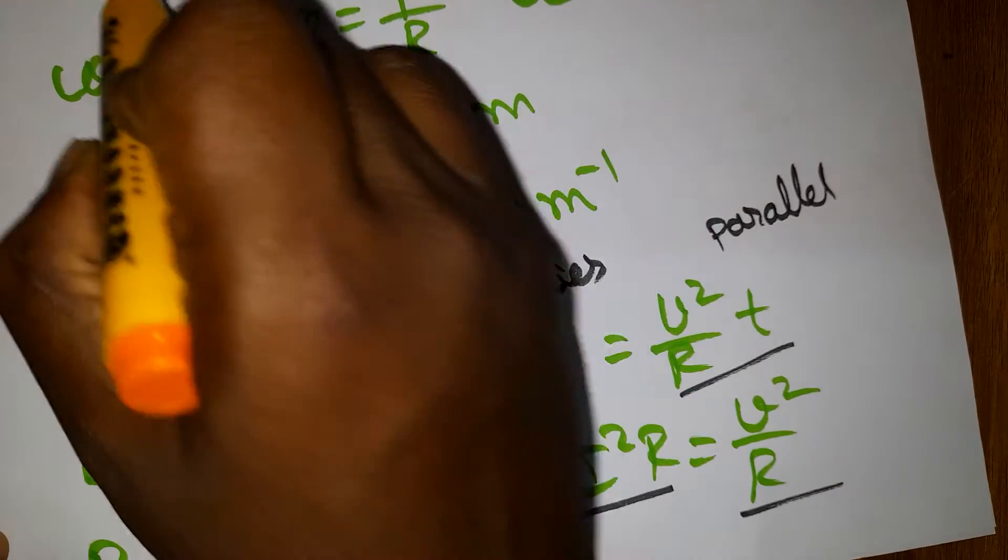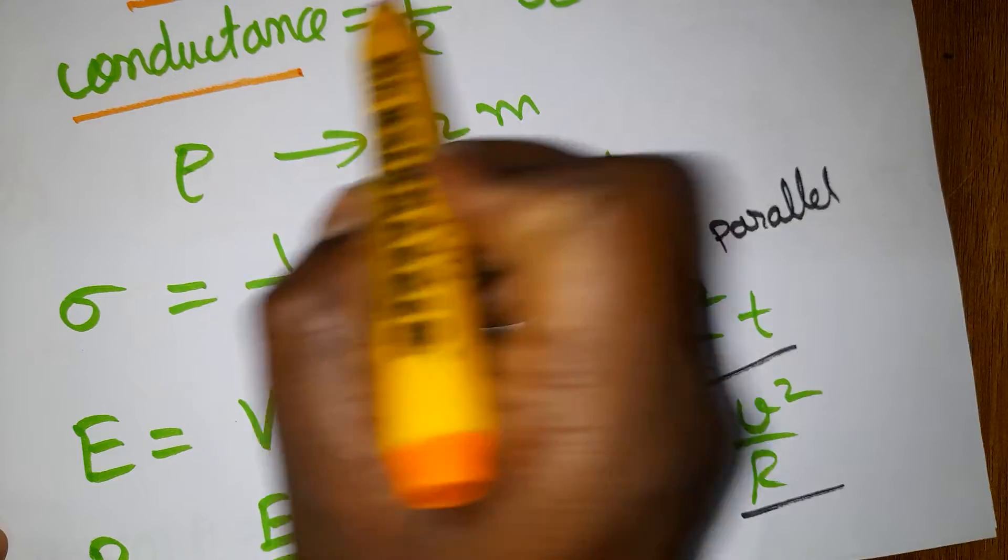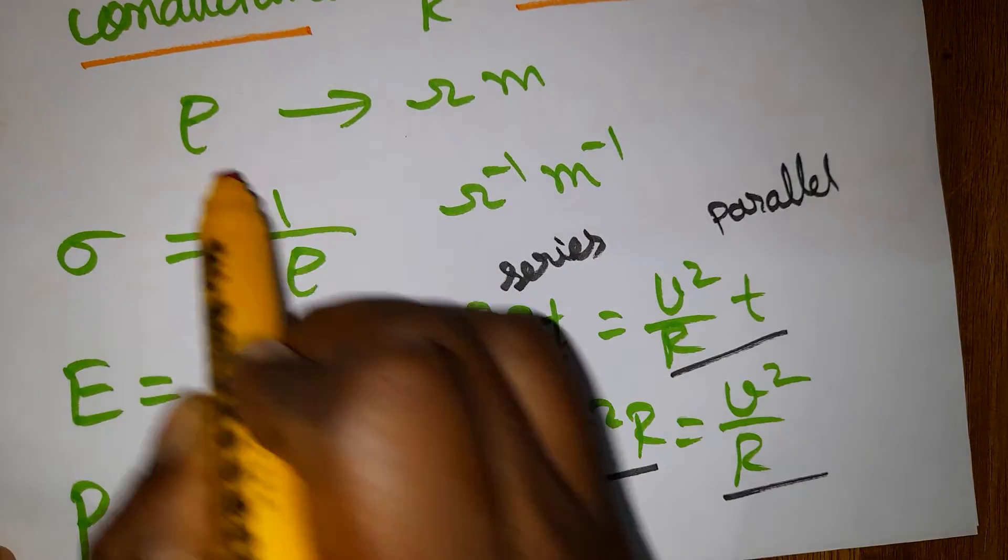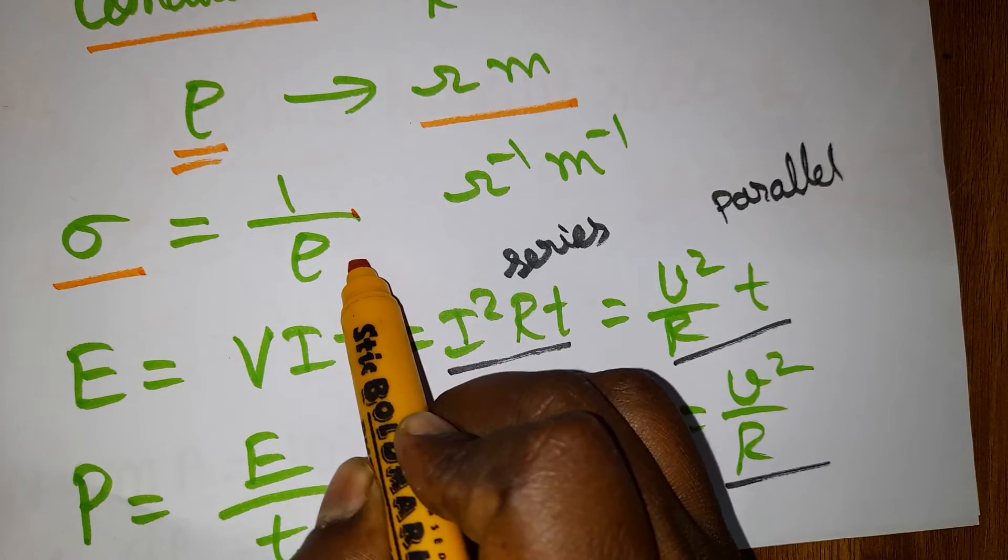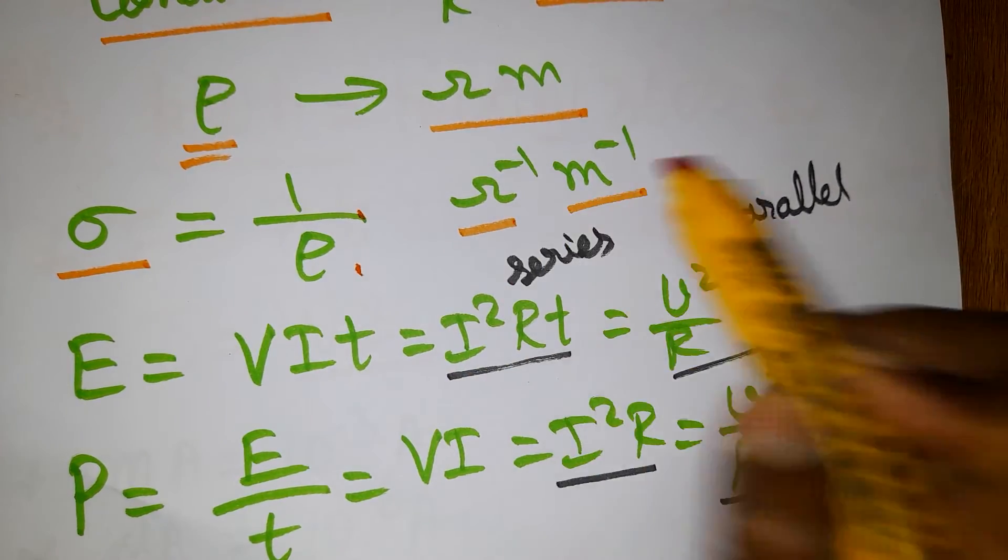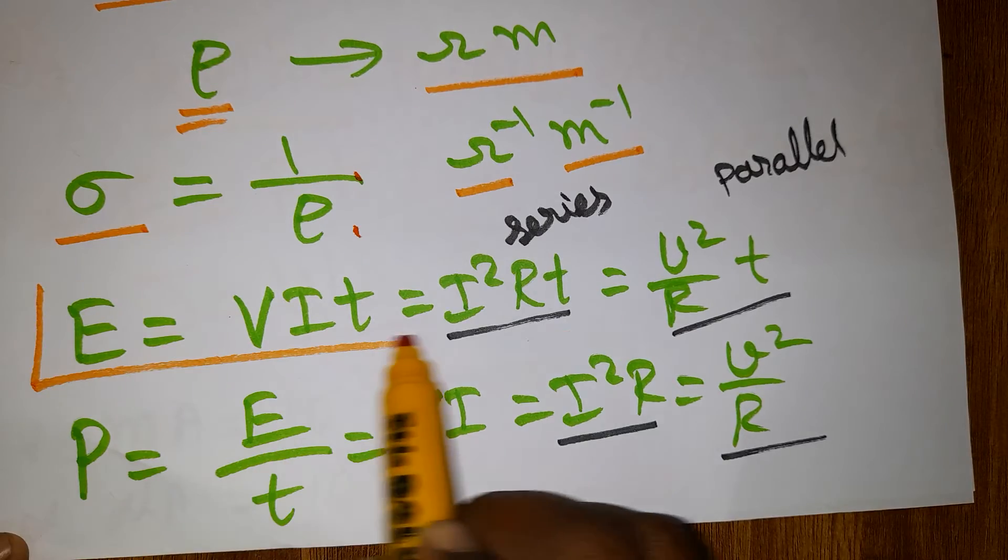Conductance is inversely proportional to resistance with unit ohm inverse. Conductivity is inversely proportional to resistivity with unit ohm inverse meter inverse. Energy has three formulas: VIT, I²RT, and V²/R × T.